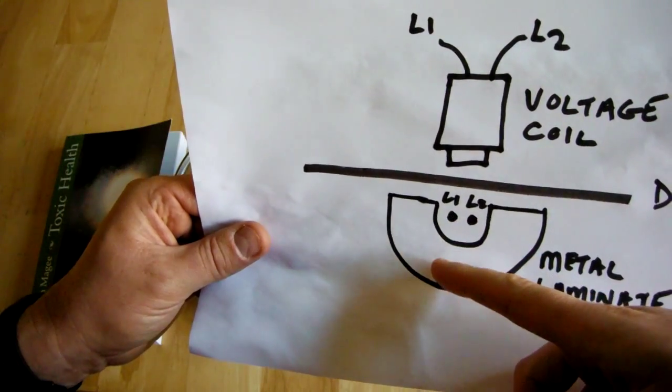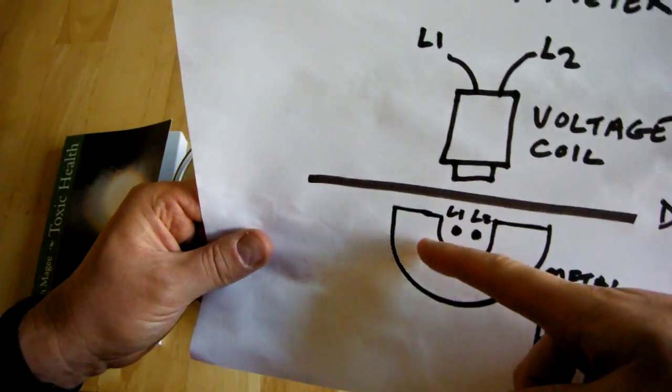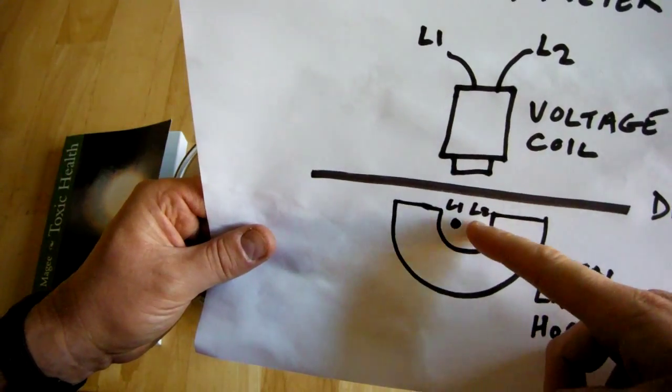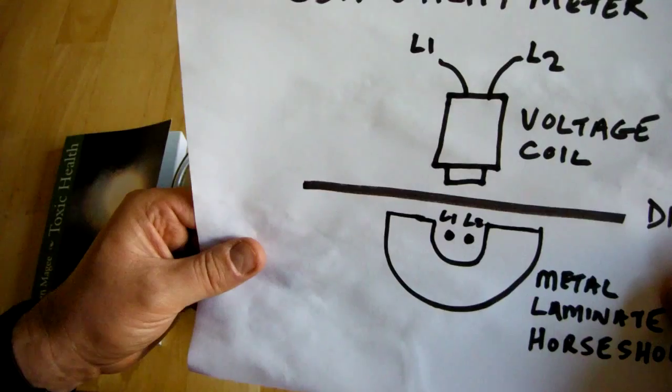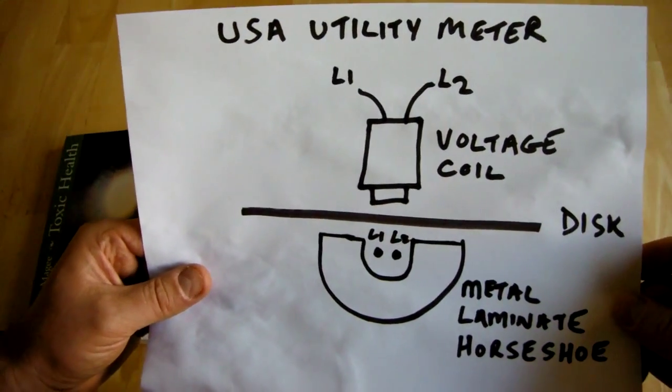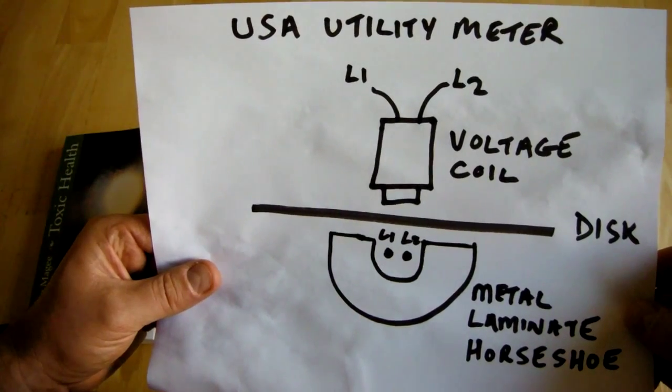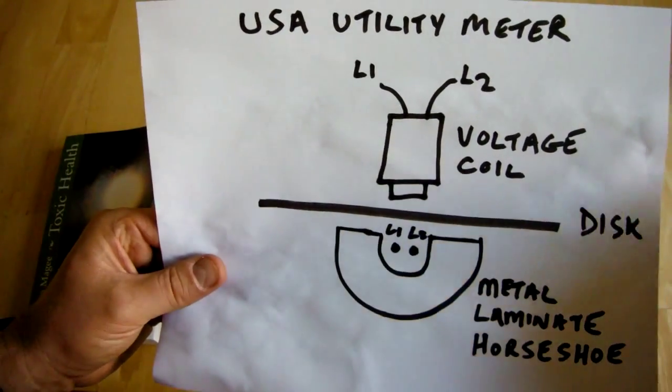And the live conductors pass through the middle of this horseshoe. So in America you have the live one and live two conductors that are in the middle of the horseshoe. And the more current that passes through L1 or L2, the more this disc spins.